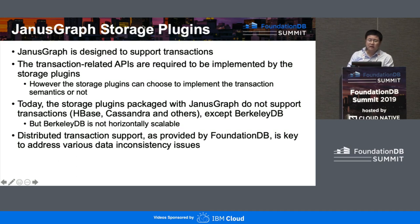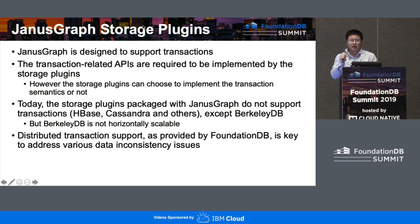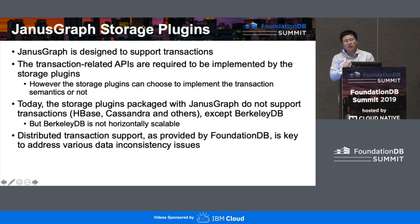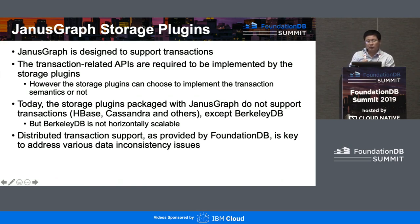JanusGraph inherently supports transactions; however, it's up to the storage plugin to decide whether to implement transaction logic. All storage plugins available in JanusGraph's public release do not have distributed transactions. BerkeleyDB is the one that supports transactions, but it's not horizontally scalable. The distributed transaction provided by FoundationDB is key to addressing the data inconsistency we encountered when developing this GraphDB. I'll spend the next three slides identifying the key data inconsistency issues and showing that distributed transactions tackle them in a very straightforward way.